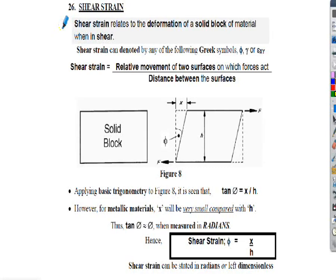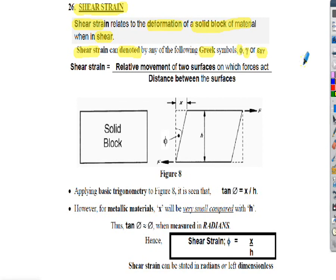This is a continuation of a previous lecture where we looked at shear stresses in members and materials. We're now going to take that a bit further and look at shear strains in members. A shear strain relates to the deformation of a solid block of material when it's in shear. Shear strain can be denoted by any of the following Greek symbols: phi, gamma, or epsilon. In this set of notes I'm going to use the phi symbol, but be aware that other symbols are often used.